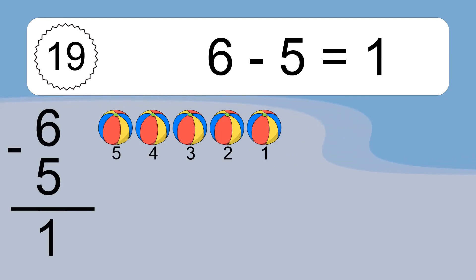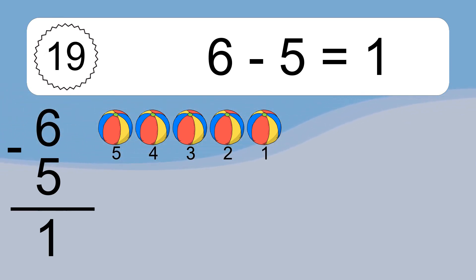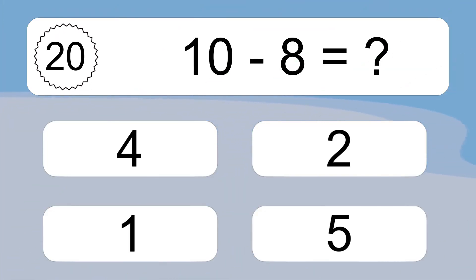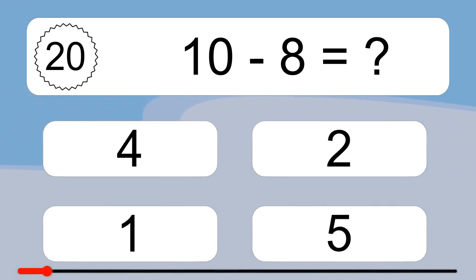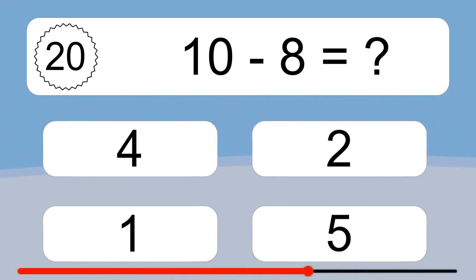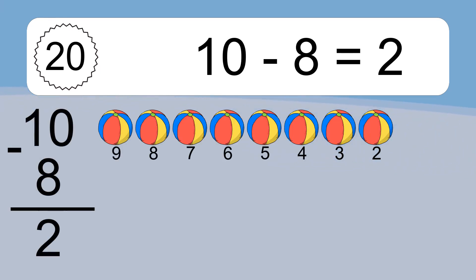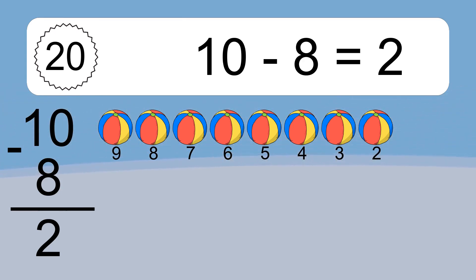6 minus 5 equals what? 6 minus 5 equals 1. Let's count it. 5, 4, 3, 2, 1. 10 minus 8 equals what? 10 minus 8 equals 2. Let's count it. 9, 8, 7, 6, 5, 4, 3, 2.